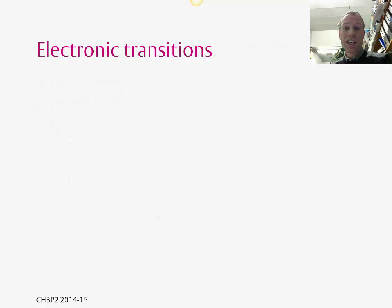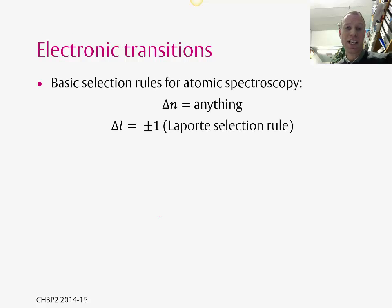Once we've got all our orbitals and our energy levels and our quantum numbers, we can start to think about electronic transitions within the system. So we need to start thinking about selection rules. Again, these selection rules you'll have seen in your first year course probably with Professor Almond. The first one is that delta N, the change in principal quantum number, is unrestricted. It can be anything. Then there's the Laporte selection rule, which states that delta L, the change in the orbital quantum number, can only be plus or minus 1.